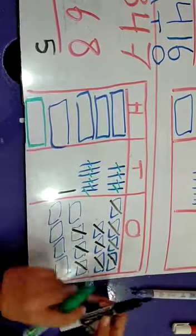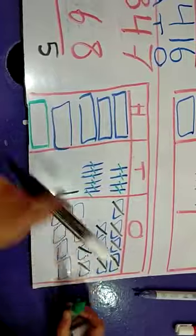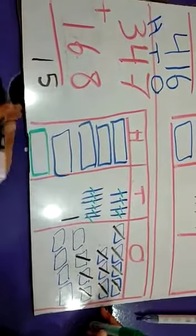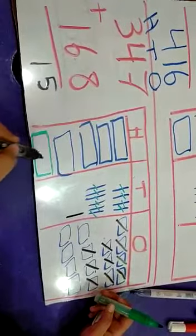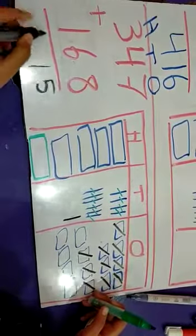Okay, so how many tens remain? 1, we will put 1 in tens. Okay, for hundreds, how many do we have? 1, 2, 3, 4, 5. 5 hundreds.